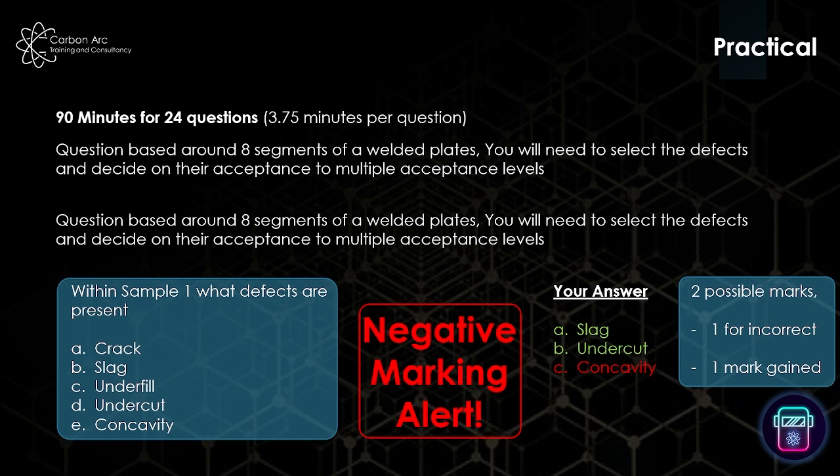You've got to be careful. If you've ever done a negatively marked exam, you end up really thinking: can I commit to that answer? If you can't, it might not be a good idea to select it. Every answer you put down, you must be certain you can see that defect. There might be one, there might be five — but if there are five and you put six, you'll only get four.